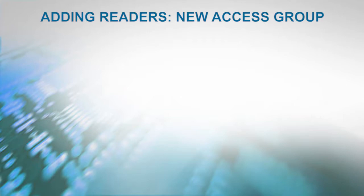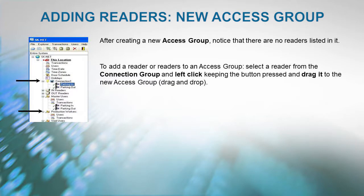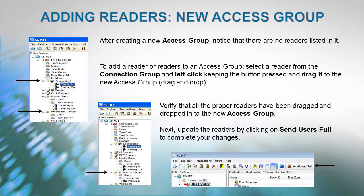After creating a new access group, you will notice that there are no readers listed in it. To add readers to an access group, select a reader from the connection group, left-click, keep the button pressed, and drag it to the new access group. Verify that all the proper readers have been dragged and dropped into the new access group, then update the readers by clicking on Send Users Full to complete your changes.